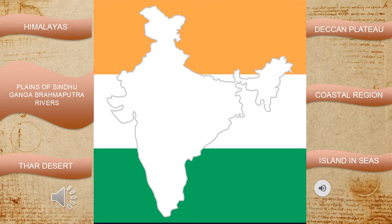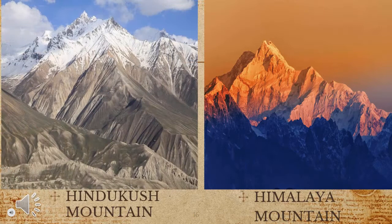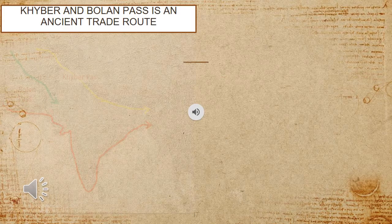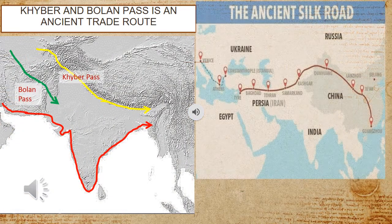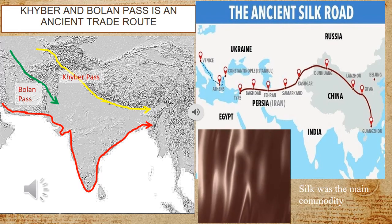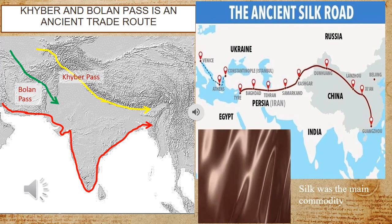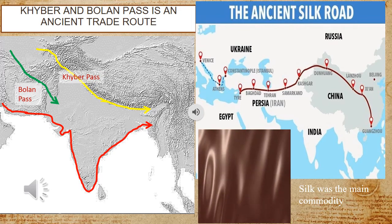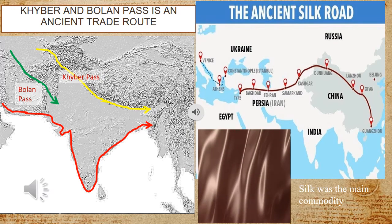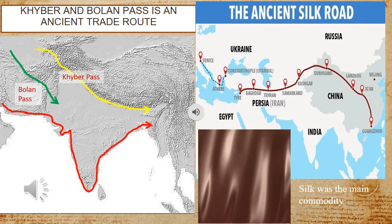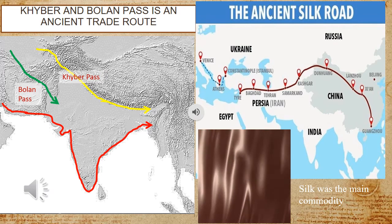The key regions are: the Himalayas, plains of the Sindhu-Ganga-Brahmaputra rivers, Thar Desert, Deccan Plateau, coastal regions, and islands in the seas. The Hindukush and Himalaya ranges have created an impenetrable wall on the northern side of the Indian subcontinent, separating it from the deserts of Central Asia. However, there is a land route through the Khyber and Bolan passes in the Hindukush mountains, connected to an ancient trade route — the Silk Route or Silk Road — named because silk was the main commodity exported to western countries using this road.